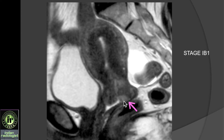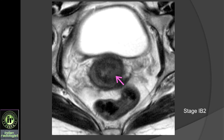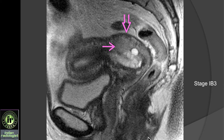Here we have an example of a tiny T2 hyperintense lesion in the ectocervix. If we measure it, it's going to be small — this is the tumor and this is going to be stage 1b1 disease. In another case, we see a tumor to the left of the midline involving the endocervix. We have lost the internal junctional zone rim and it involves the cervical stroma, but the outer rim is still intact — this is stage 1b2. In another case, the tumor is causing expansion of the posterior cervical wall and it's going to be more than 4 centimeters in length — this is stage 1b3. So you have to identify the tumor, which is T2 hyperintense with restricted diffusion, and measure it to decide which stage of 1b it is.